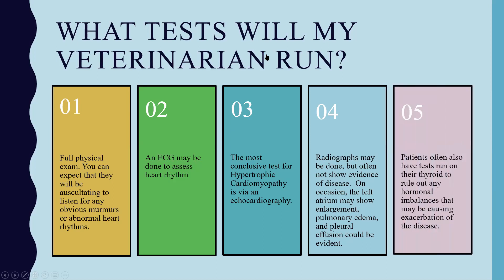Some patients will also have their thyroid tested to rule out hormonal imbalances that could be causing exacerbation of the disease. Hypothyroidism as well as systemic hypertension, or elevated blood pressure, are known causes of secondary hypertrophic cardiomyopathy syndrome. If the cat is over five years old, it is recommended to test blood thyroid hormones to exclude this as a cause.